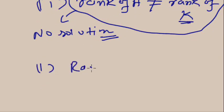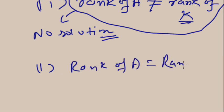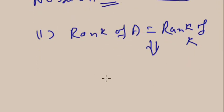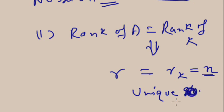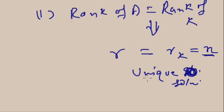Now we consider the situation where rank of A equals rank of K. Within this case there are also two sub-situations. Suppose rank of A is R and rank of K is R — they are equal. If this rank R is equal to the number of variables n, then you will get a unique solution for all the variables.